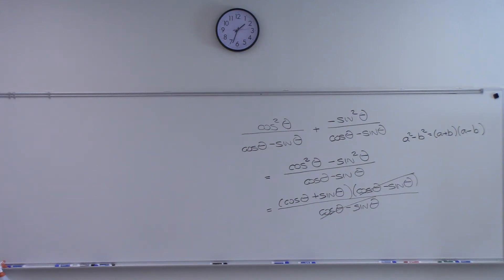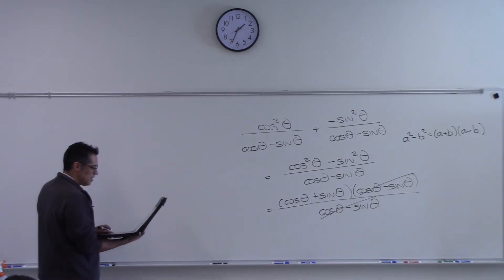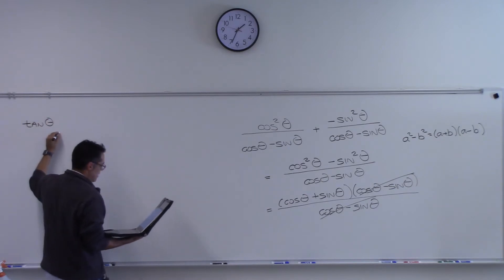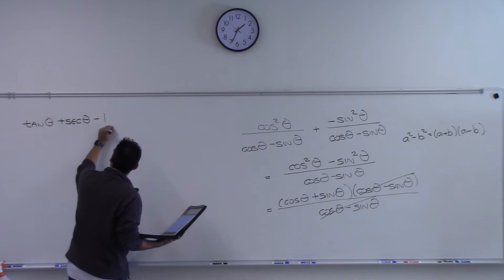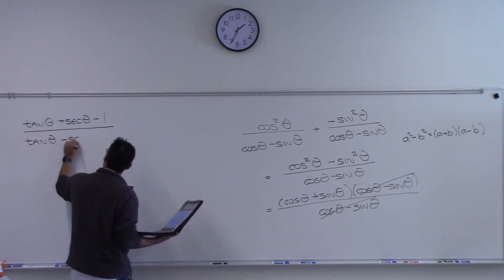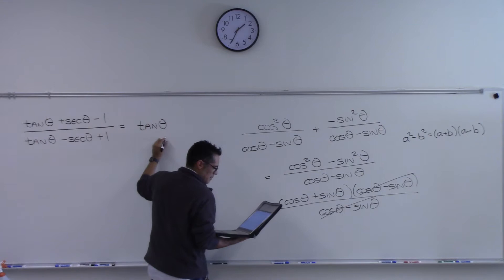Let's do problem 61. Problem 61 is pretty bad. It's tangent theta plus secant theta minus one over tangent theta minus secant theta plus one, and that equals tangent theta plus secant theta.